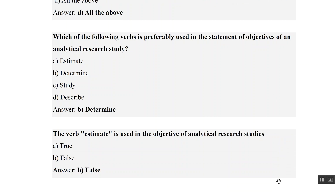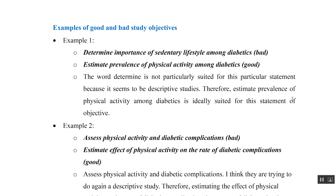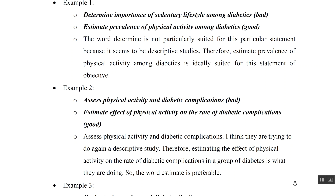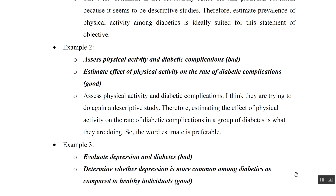Now let us look at examples of good and bad study objectives. Example one: 'Determine the importance of sedentary lifestyle among diabetics' is a bad objective because it is not specific. Better: 'Estimate the prevalence of physical activity among diabetics.' Example two: 'Assess physical activity and diabetic complications' is bad; improved: 'Estimate the effect of physical activity on rate of diabetic complications.' Example three: 'Evaluate depression and diabetes' is bad; improved: 'Determine whether depression is more common among diabetics compared to healthy individuals.'